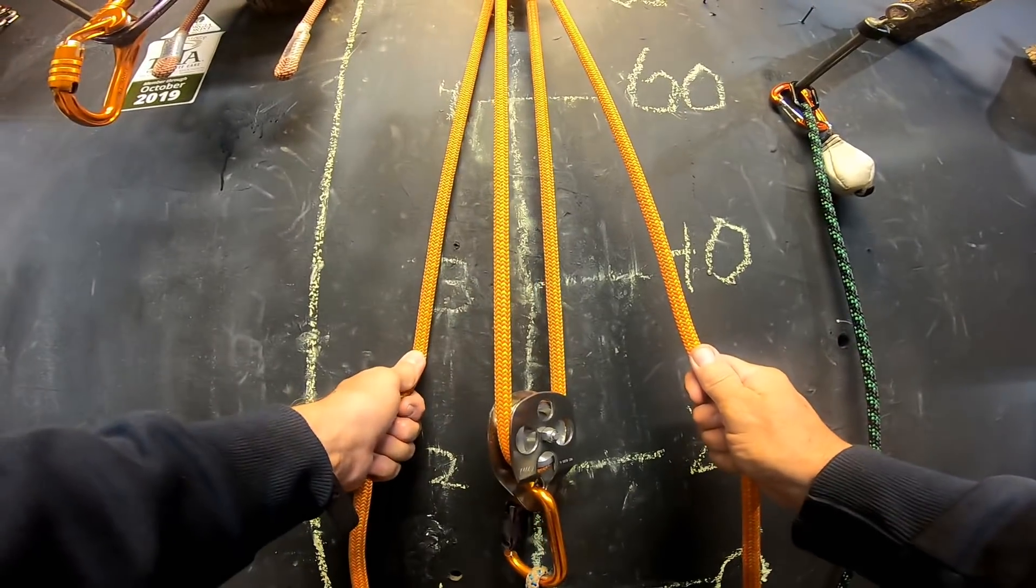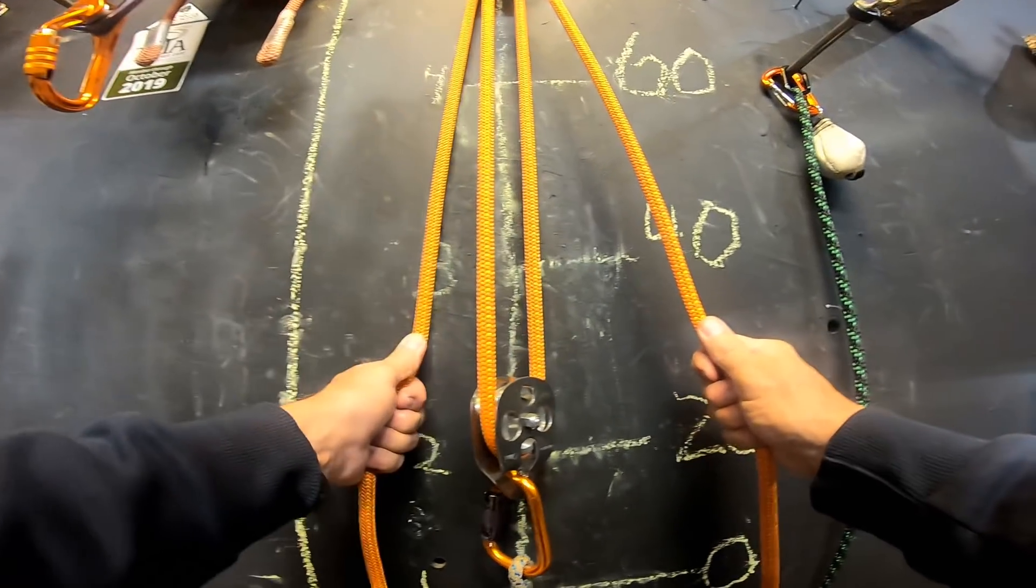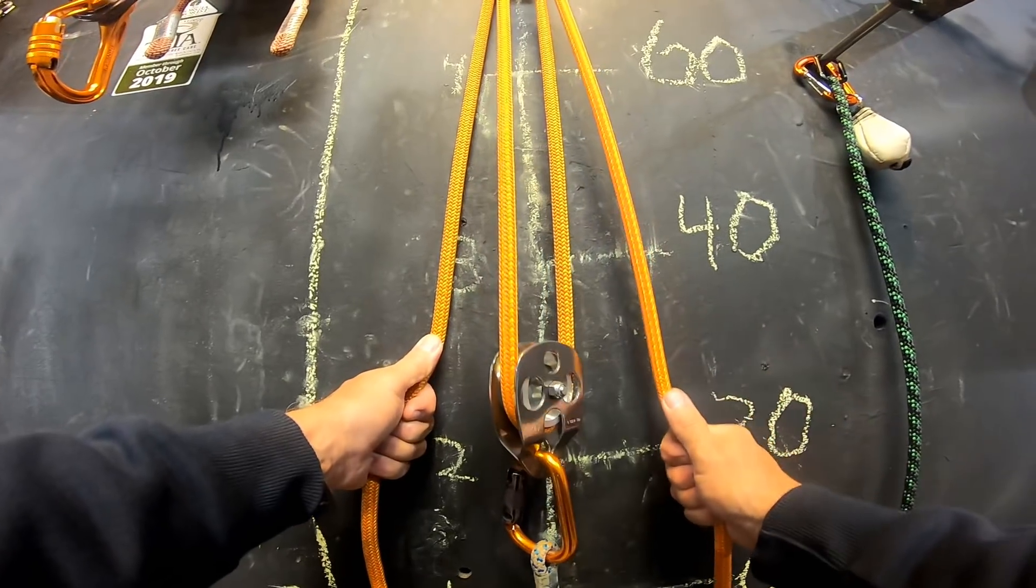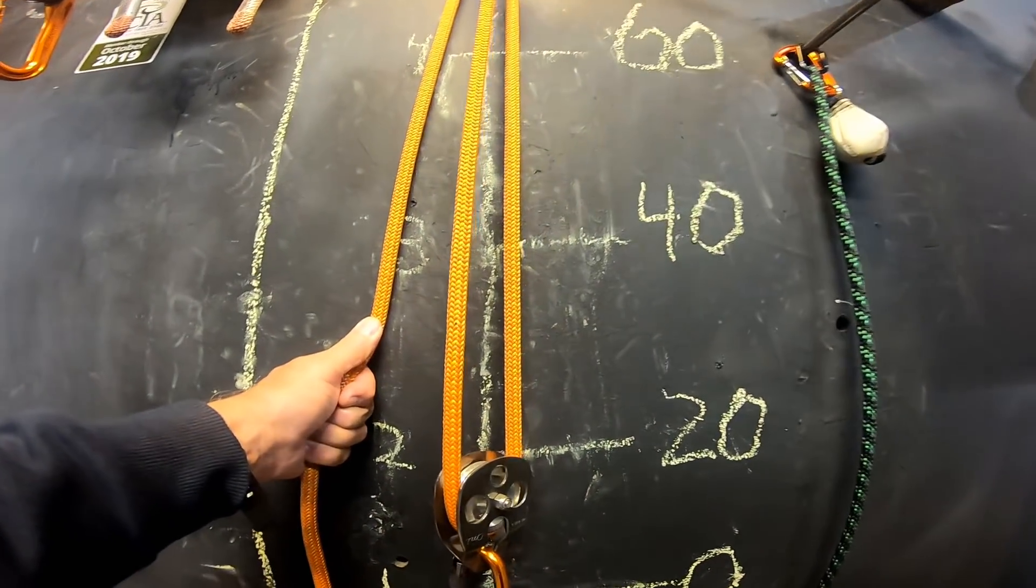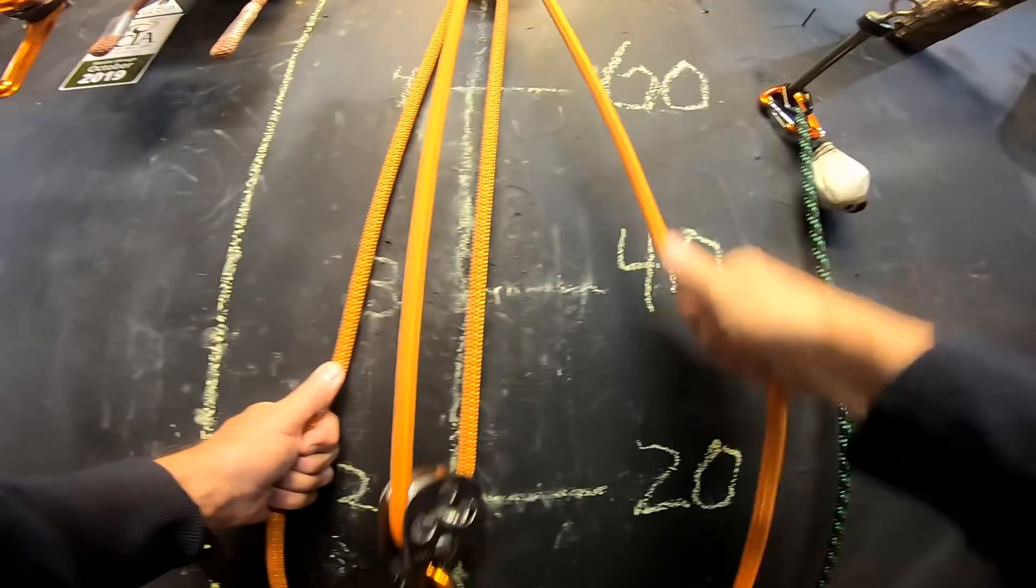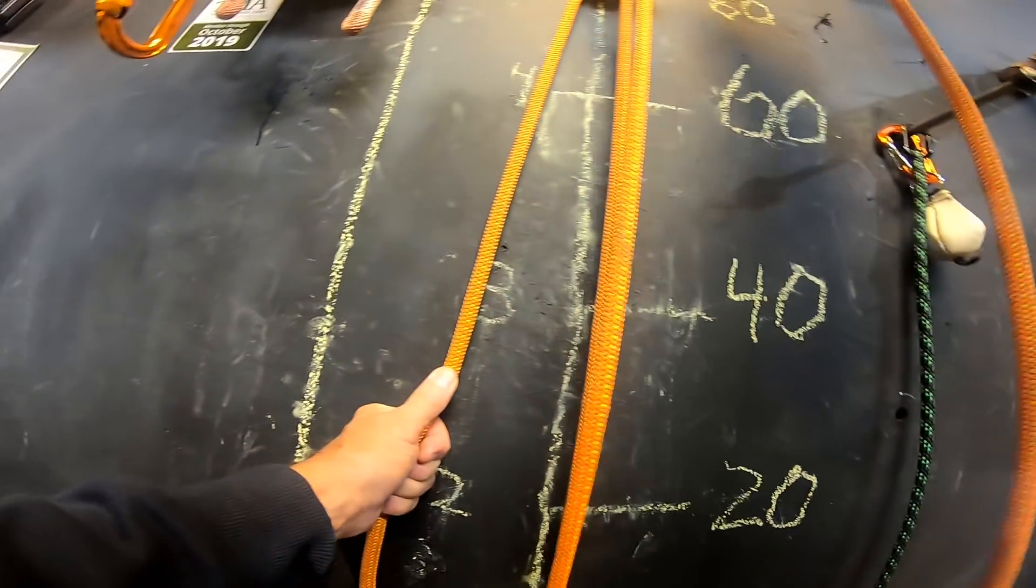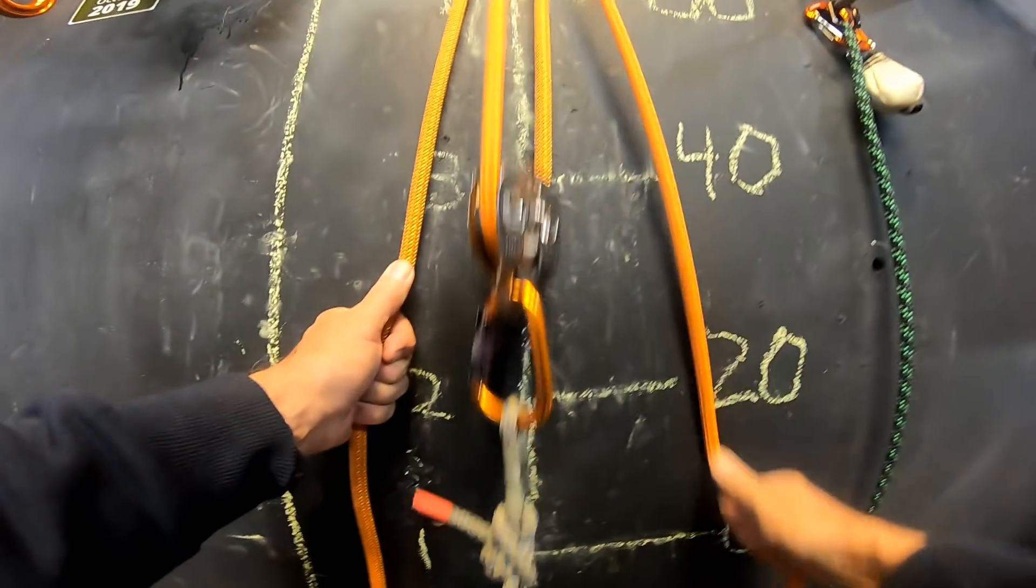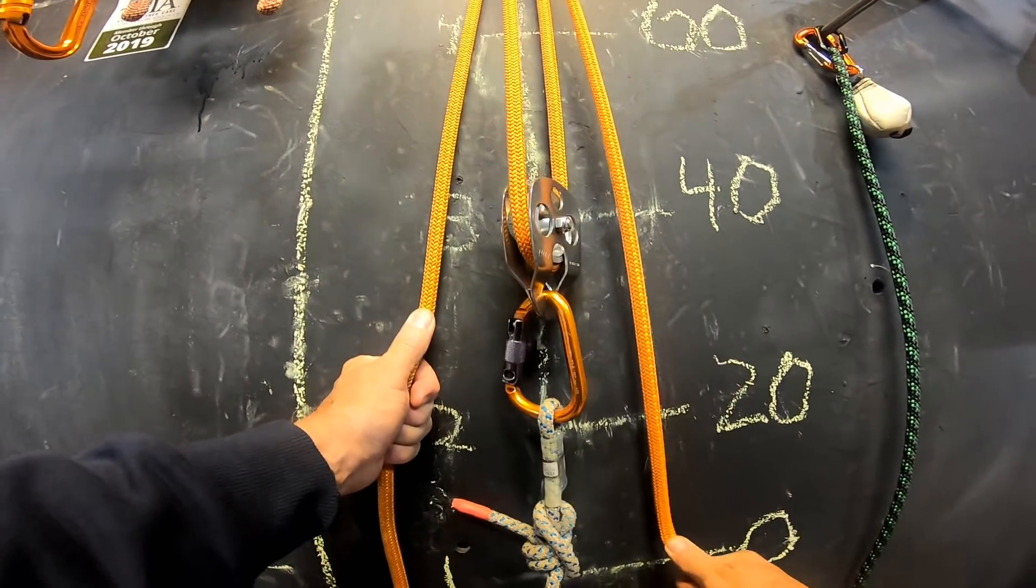Now, if one is fixed, if this guy's holding it and I pull up, now I have a mechanical advantage. Again, it doesn't matter if I'm pulling this direction straight down or straight up. It's a two-to-one mechanical advantage for that load.